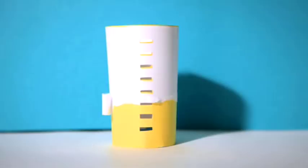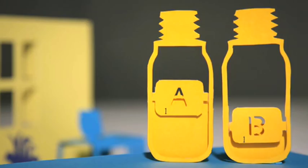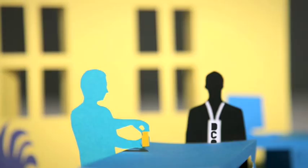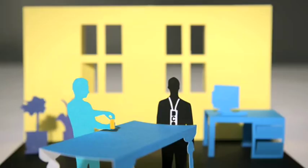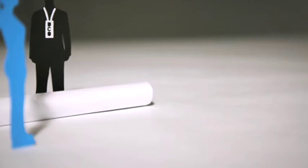You will then be asked to divide the urine sample into B and A bottles and then seal them. Throughout the process, you will be the only one to handle the sample collection equipment, unless you require assistance. Finally, you will be asked to review and sign the doping control form.